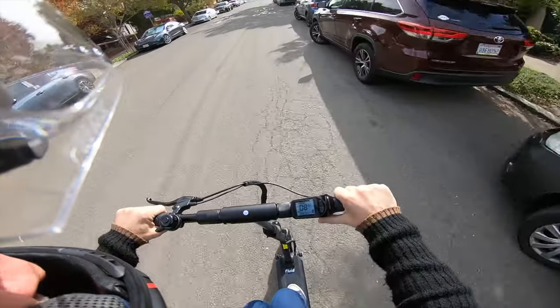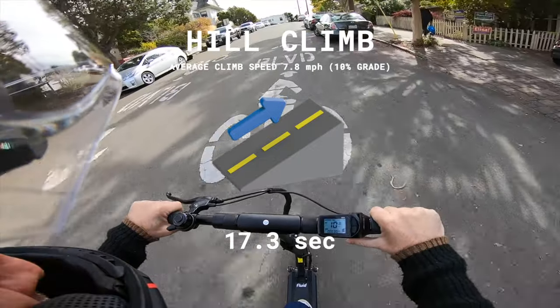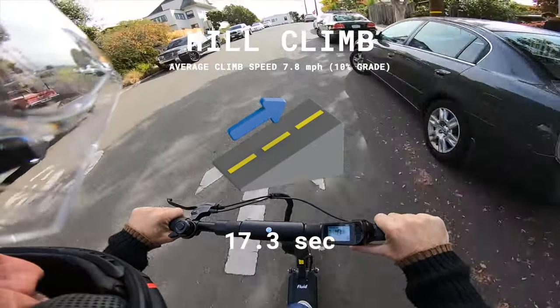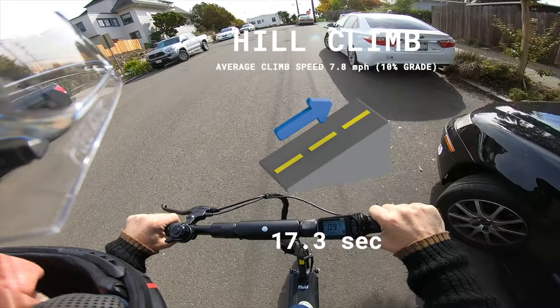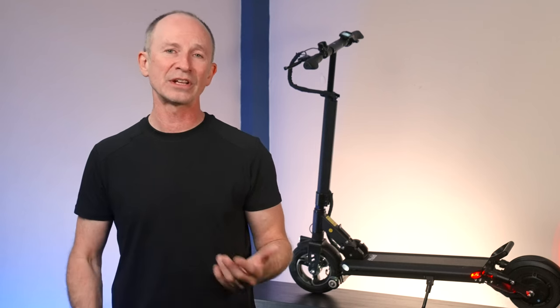When it came to our steep, 10%, 200-foot-long test hill, the Horizon averaged 7.8 miles per hour from a standing start. While this is the slowest of the three competitors, it still maintained a satisfying 20 miles per hour, climbing more typical 4-6% grade hills during the range test.